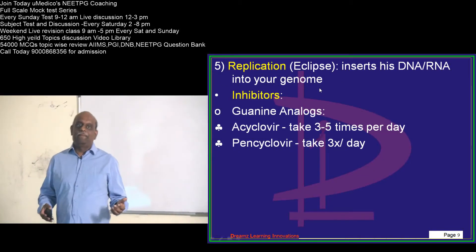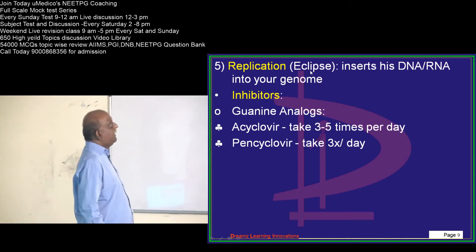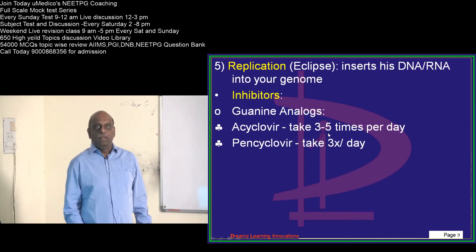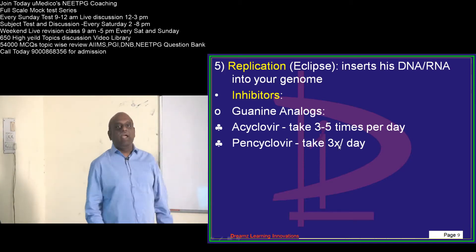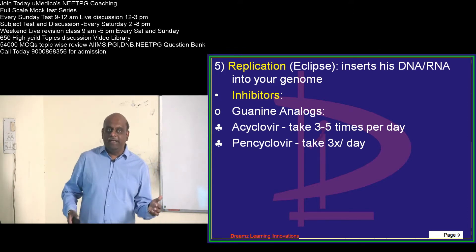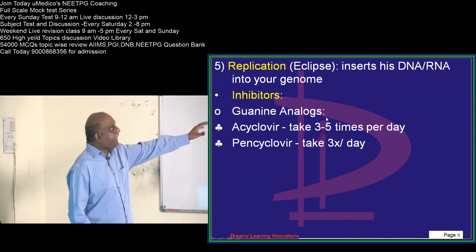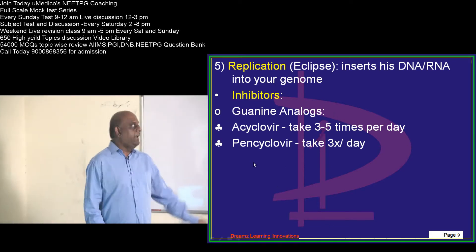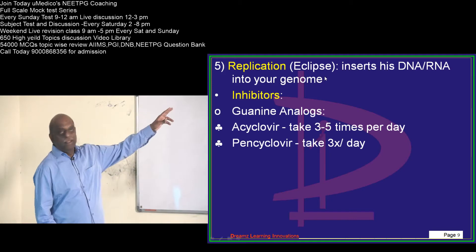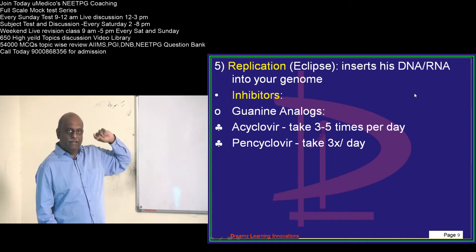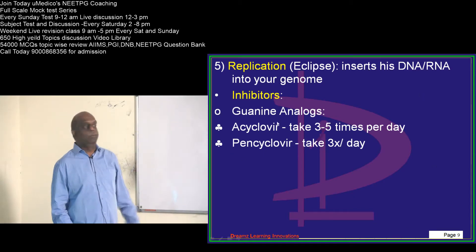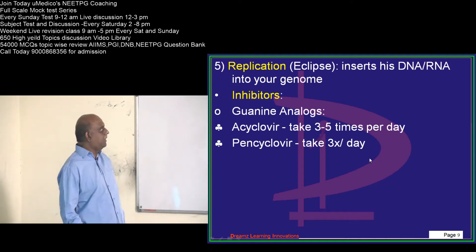During the eclipse phase of replication, viruses insert their DNA or RNA into the host genome. Guanine analogs like acyclovir or pencyclovir act as antiviral agents by preventing the insertion of the viral genome into the host genome, stopping replication because they are analogs of guanine.